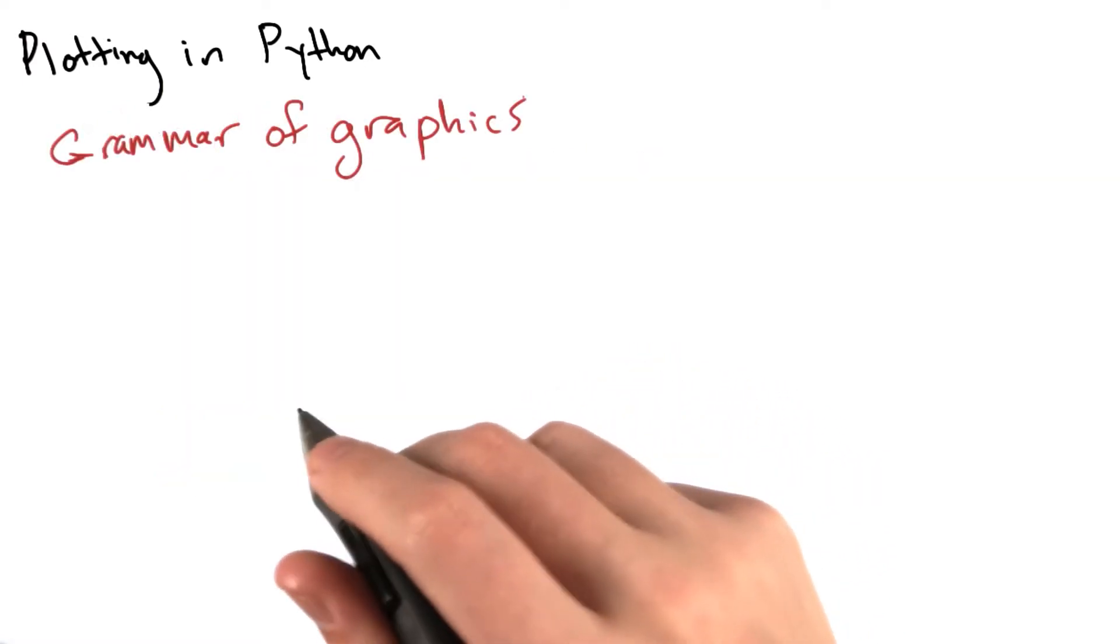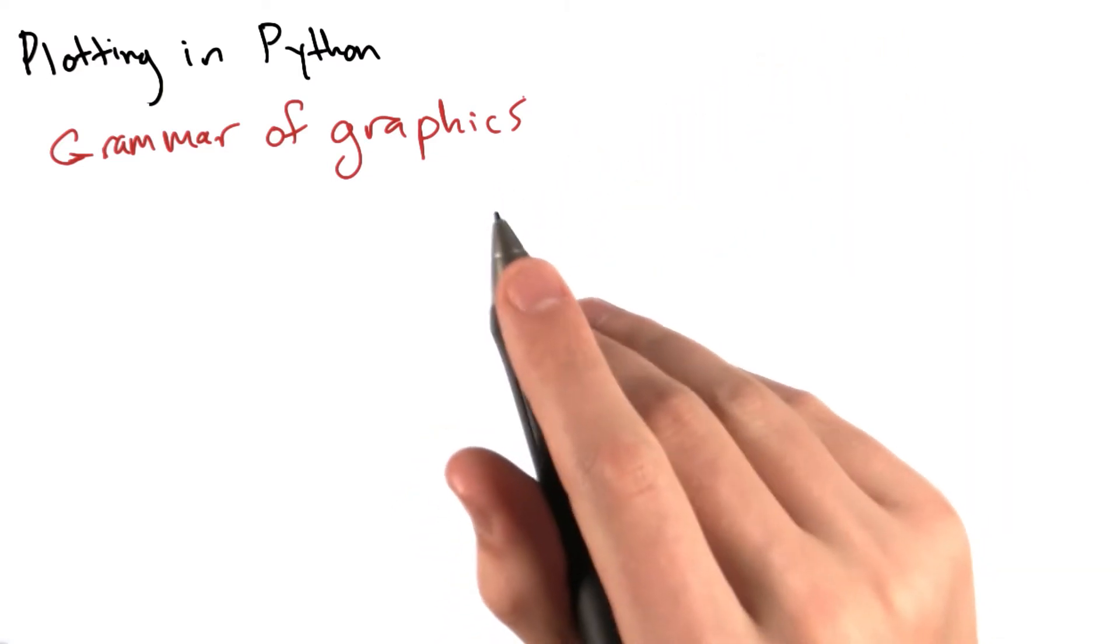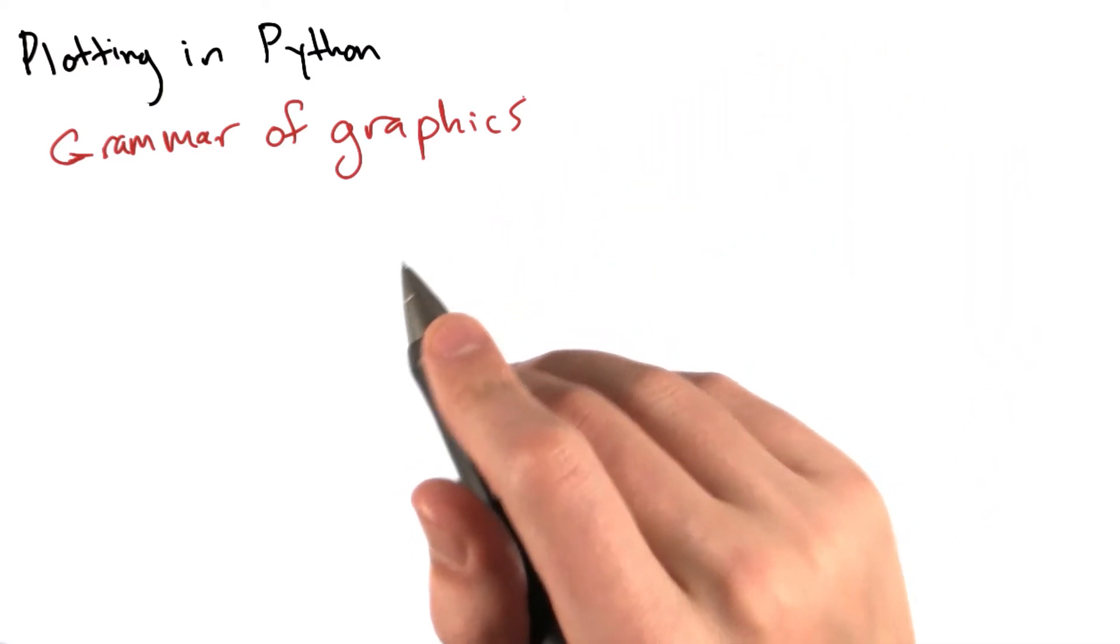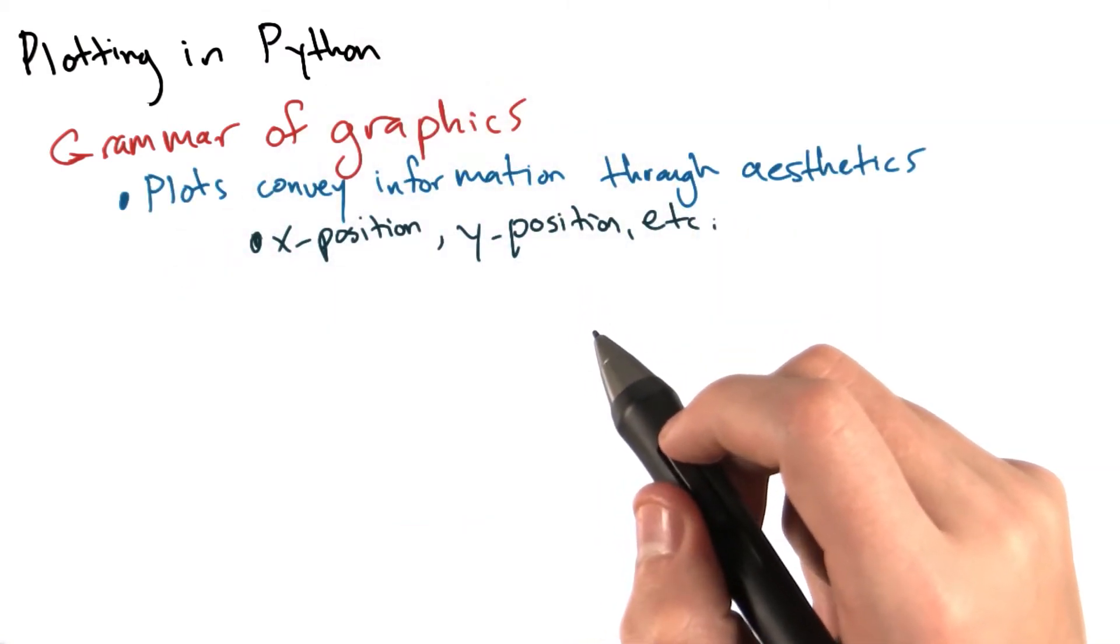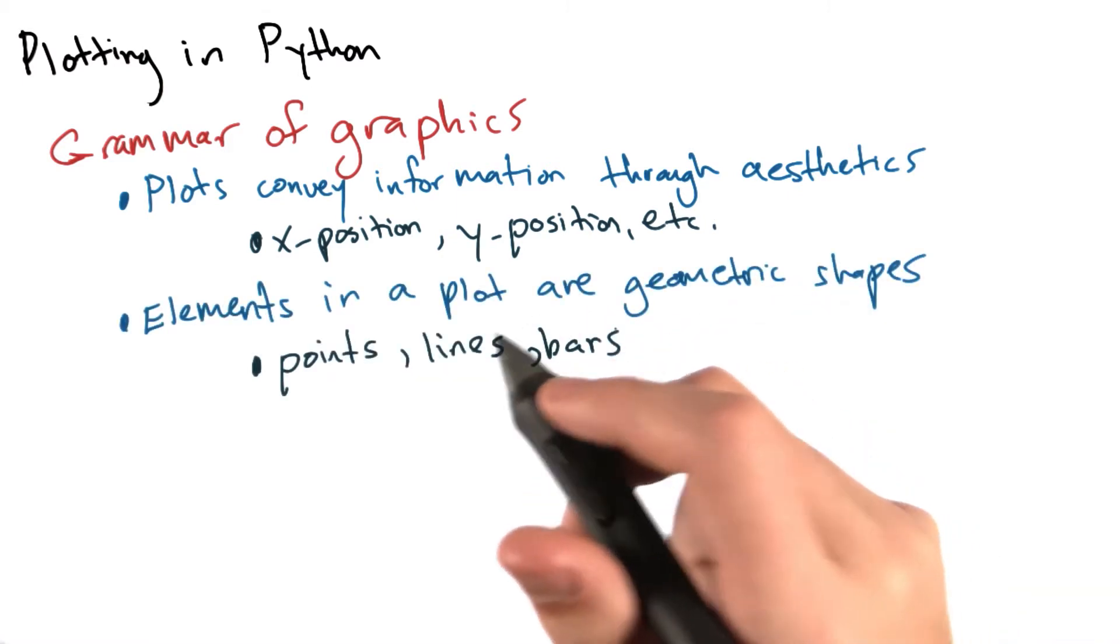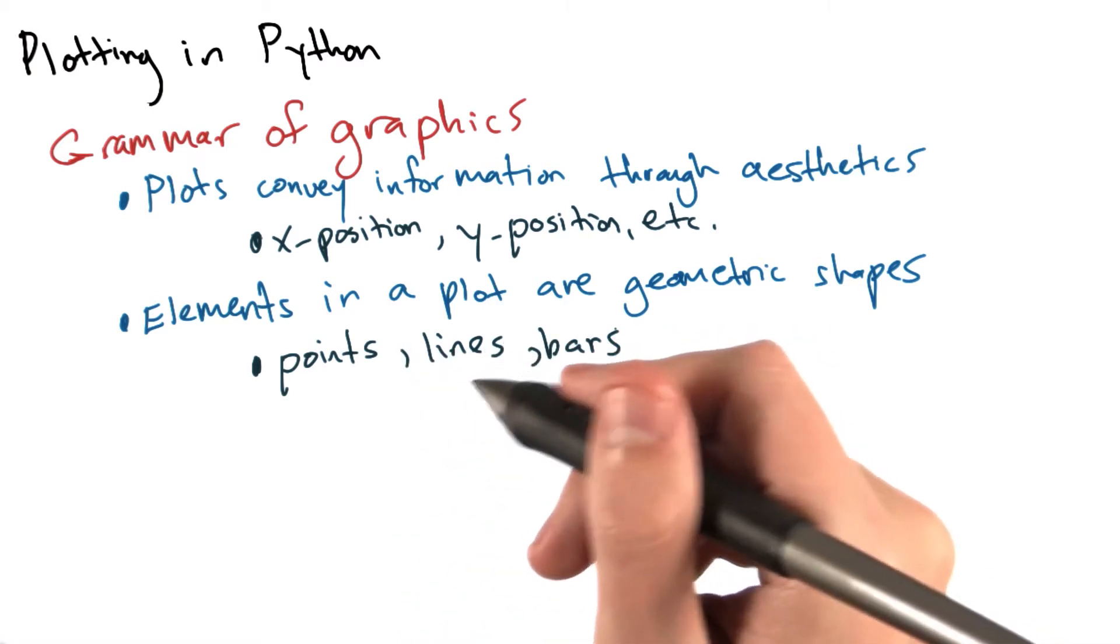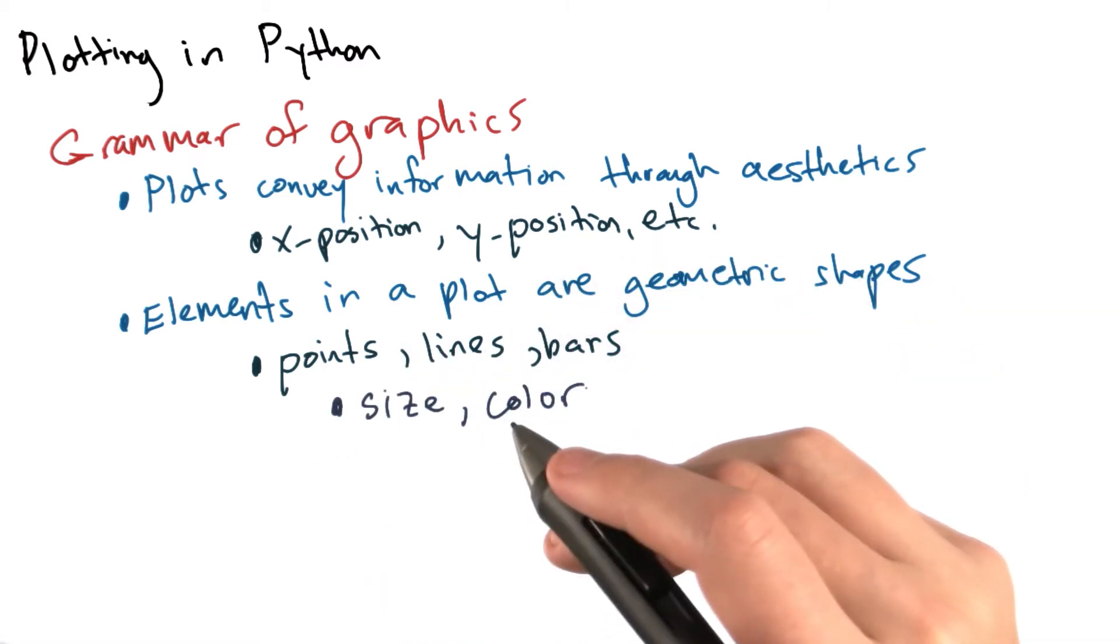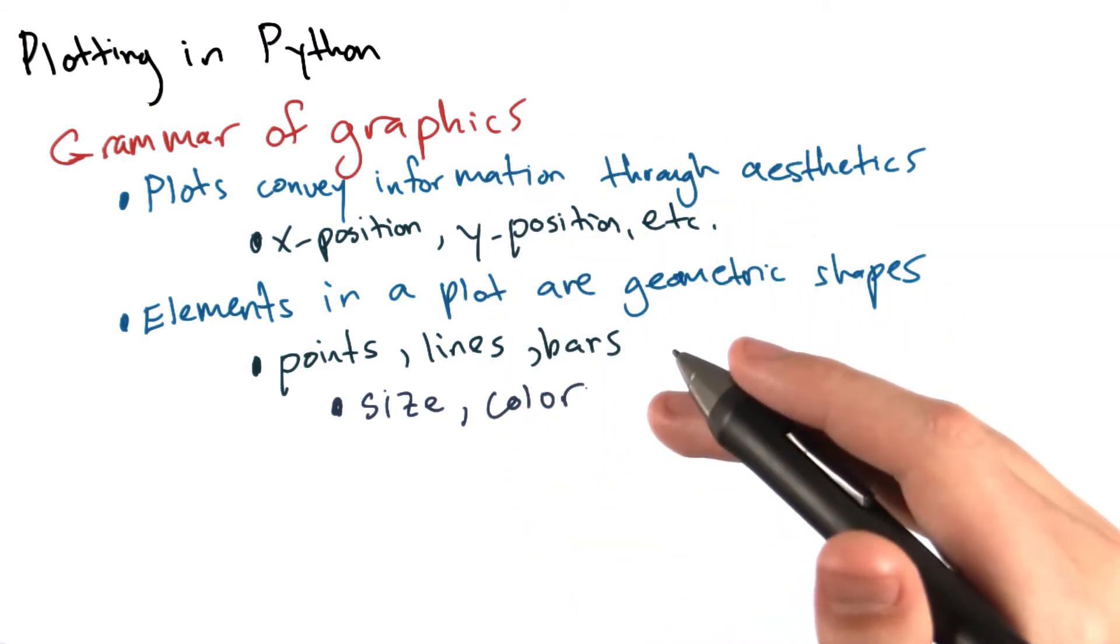To quickly summarize the ideas behind the grammar of graphics, plots convey information through their aesthetics, such as x position or y position. The elements in a given plot are geometric shapes, such as points, lines, or bars. Some of these shapes can have aesthetics of their own, such as their size or their color. You can think of creating plots in ggplot through the grammar of graphics as adding layers to our plot.